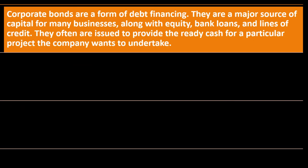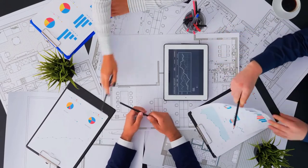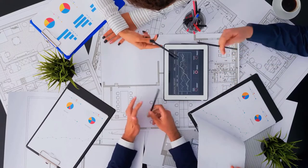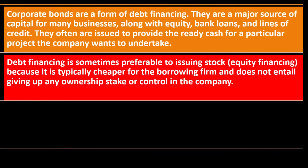Why do corporations sell bonds? They want money. During a company's growth phase, they need capital for expansion to generate future revenue. Corporate bonds are a form of debt financing and a major source of capital for many businesses, along with equity, bank loans, and lines of credit. They are often issued to provide ready cash for a particular project the company wants to undertake. Debt financing is sometimes preferable to issuing stocks because it is typically cheaper for the borrowing firm.